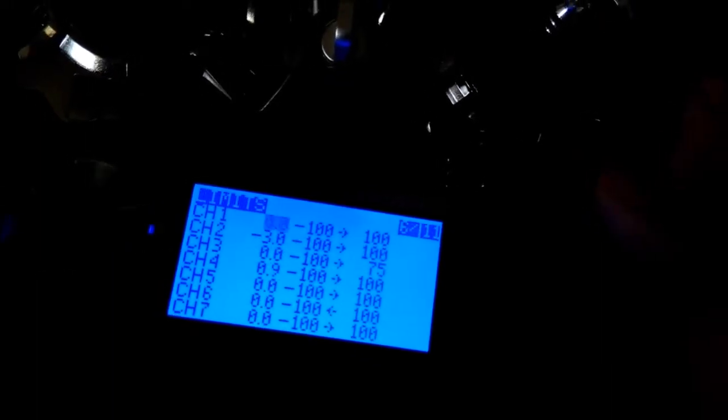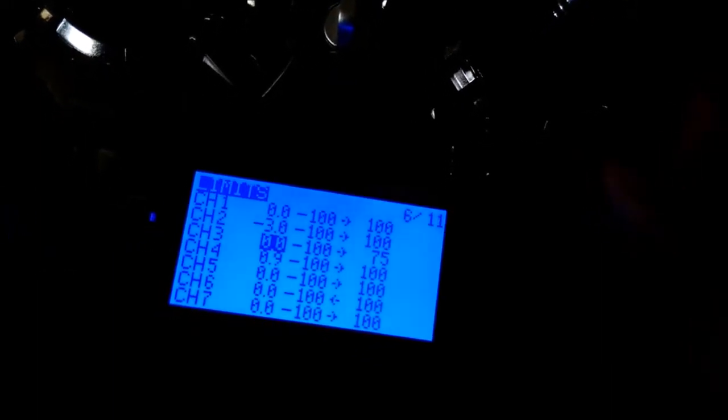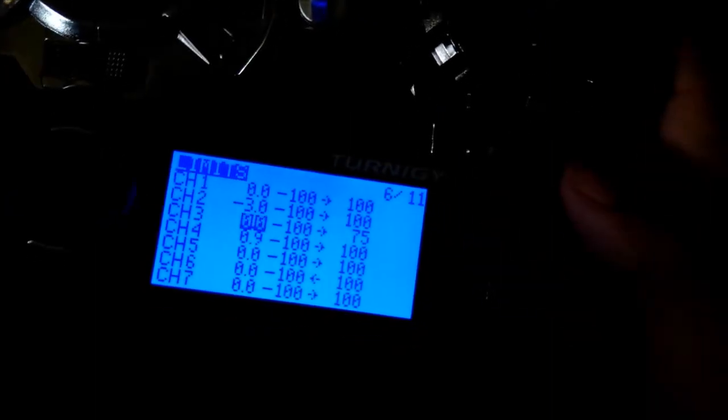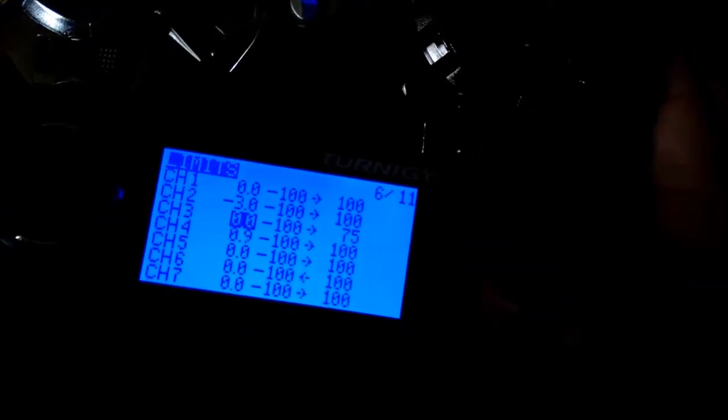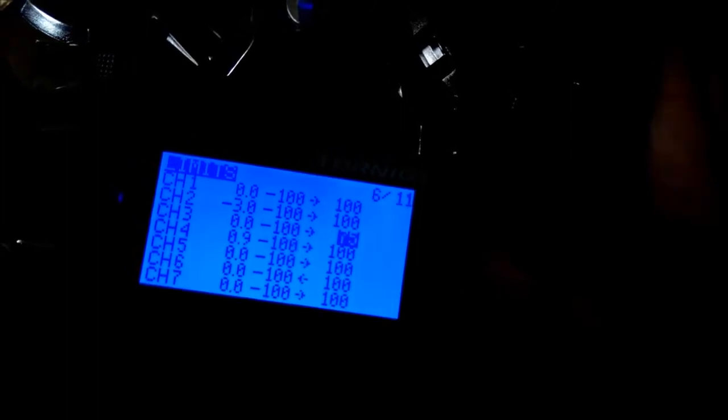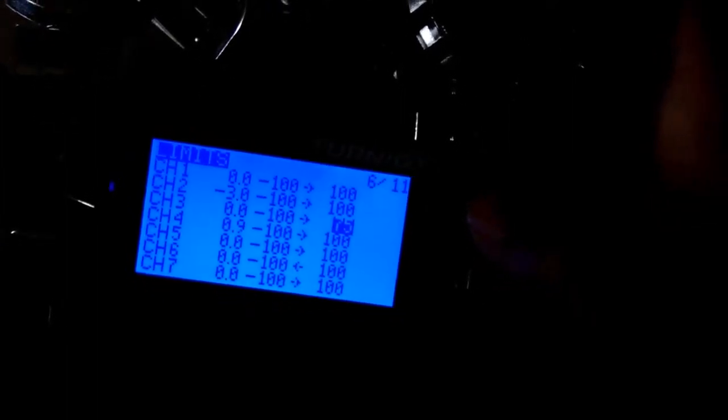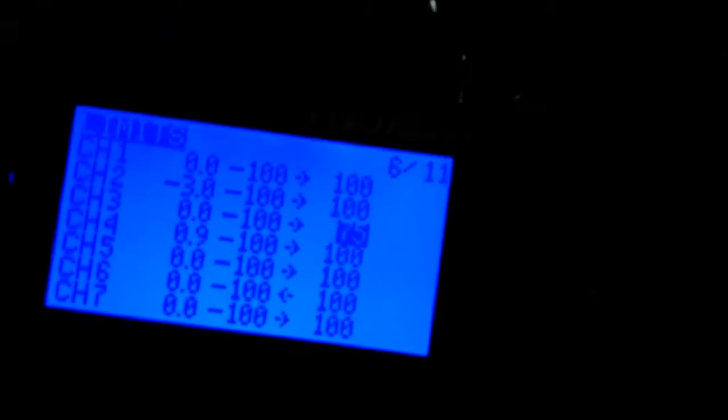I'll go to limits. And then my throttle, Channel 3 is my throttle. So you just scroll over. Make sure it's not flashing. Scroll over to the right.